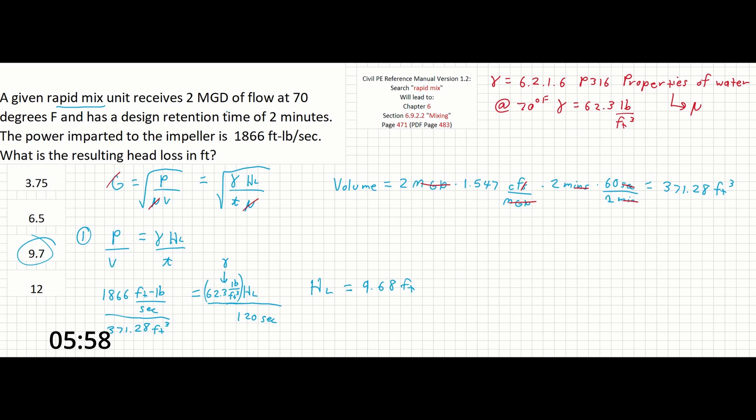And finally you just have to know that your flow rate here can be converted into a volume of the rapid mix unit by knowing how much flow is passing through and how long that flow is detained for in the unit. Knowing these things you'll be able to solve this equation very quickly and get your head loss. It's also worth noting that this section contains a number of other equations that the test could ask you about, so it's probably a good idea to get familiar with both this section as well as the physical properties of water table in this section. If you do that in advance you'll be able to more efficiently tackle problems like this on the exam day.